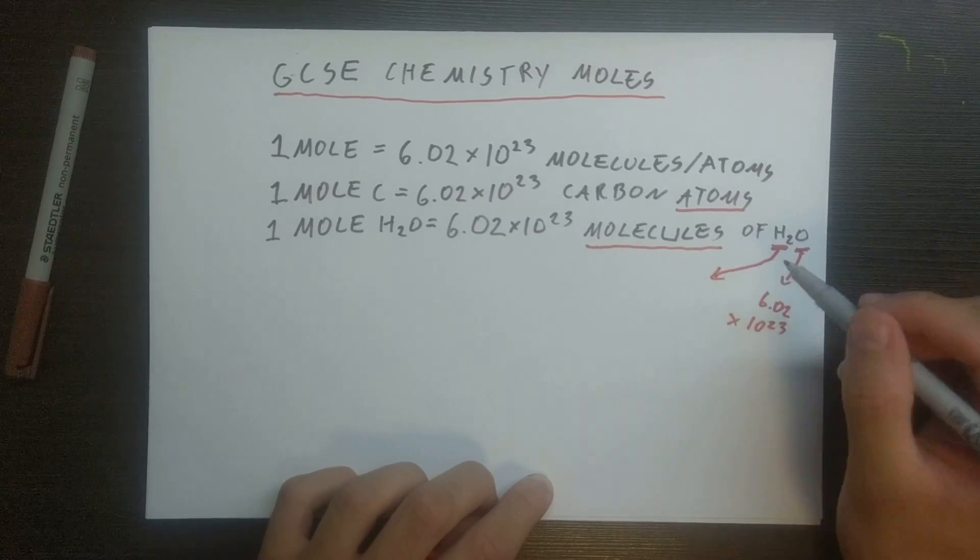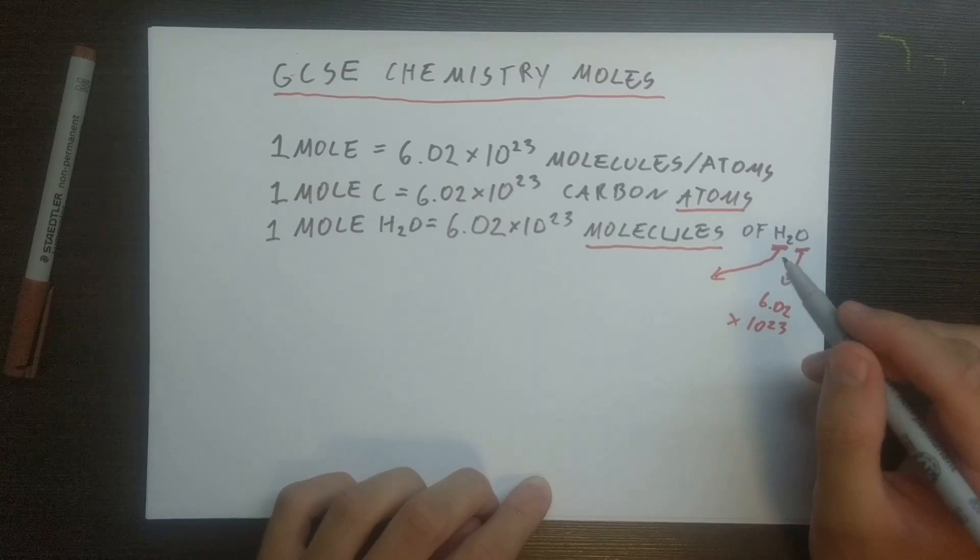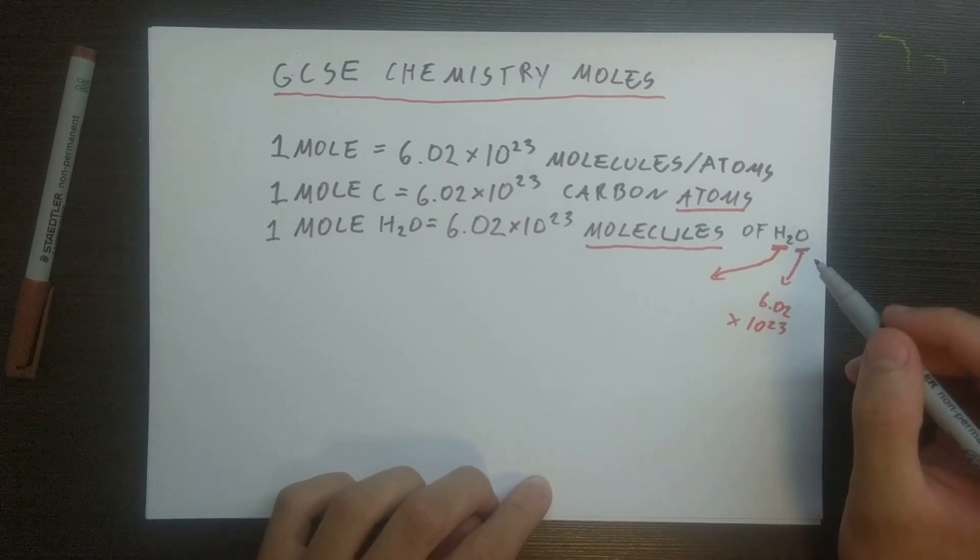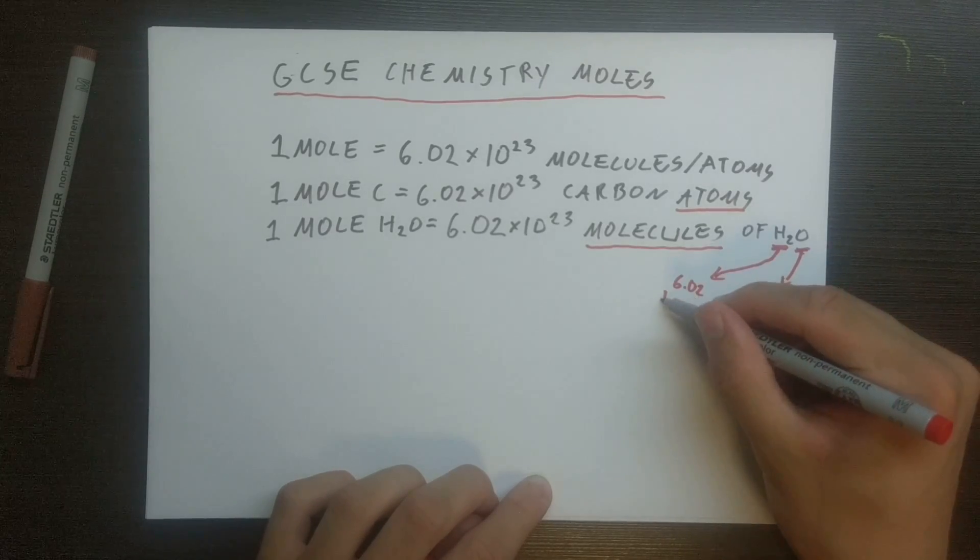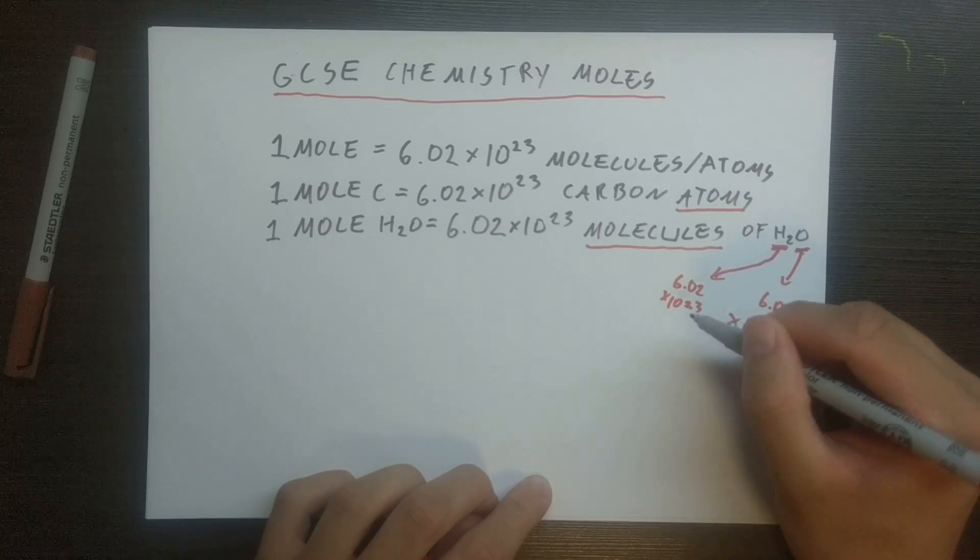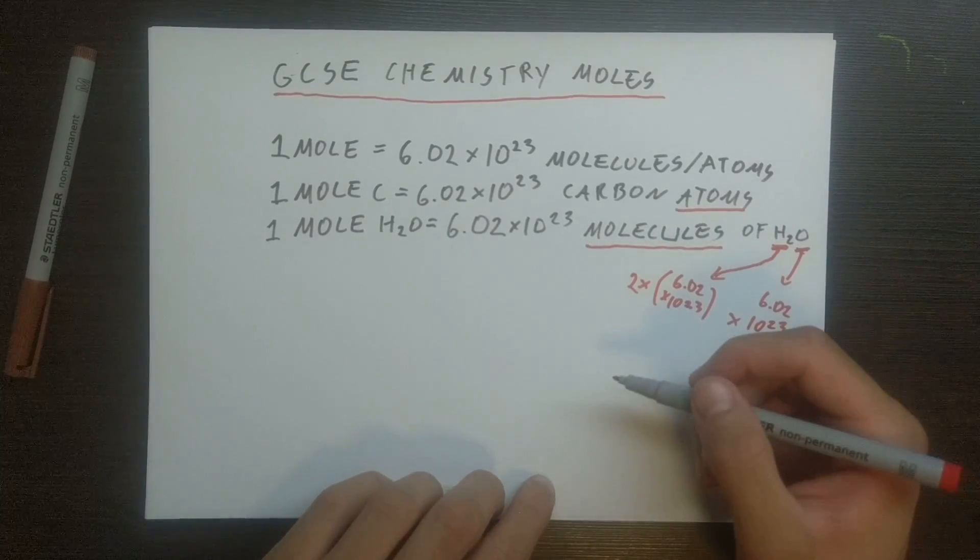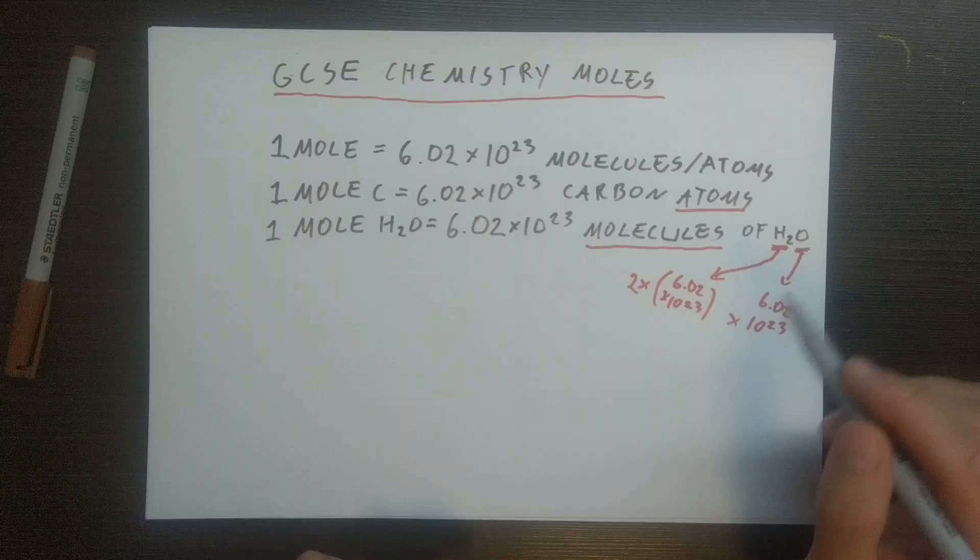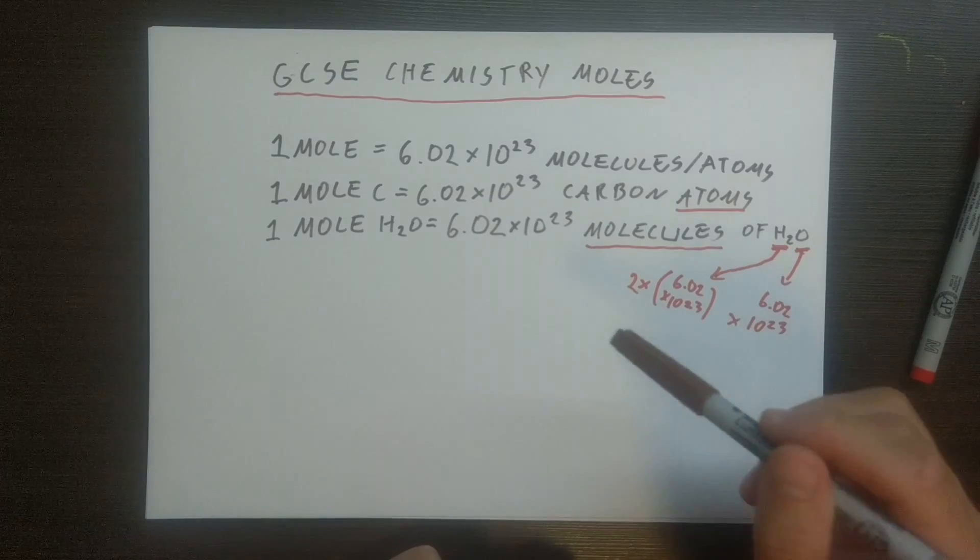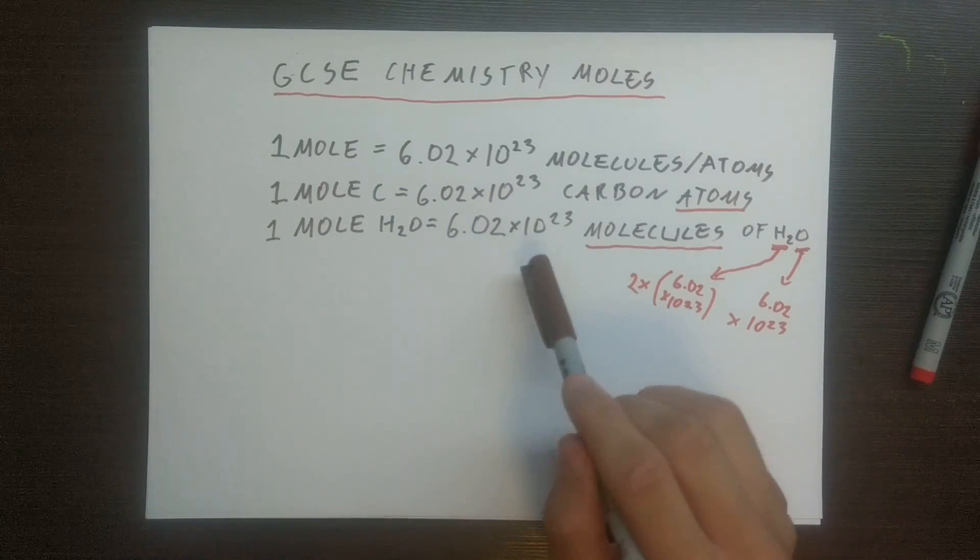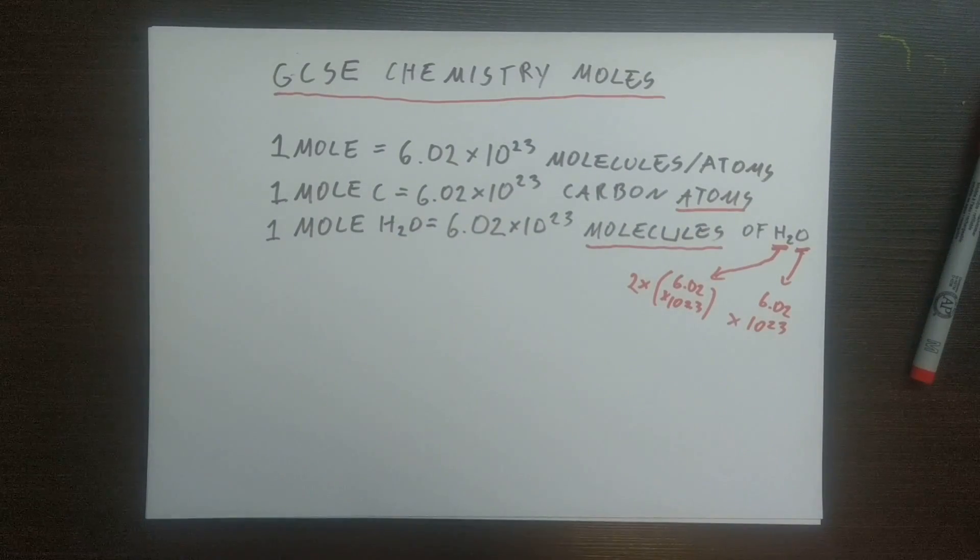So actually, when we split it into atoms, if we stop thinking about molecules and we split it into atoms, then we are talking about 6.02 times 10 to 23. So we're talking about double that in hydrogen atoms. This many hydrogen atoms combined with this many oxygen atoms would give us one mole, in other words, this many molecules of H2O.